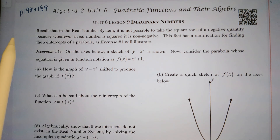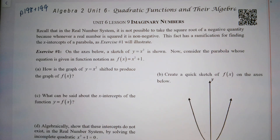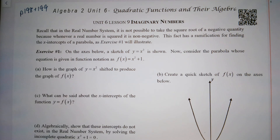Today we're on pages 198 and 199 of our textbook, lesson 9: imaginary numbers. Recall in the real number system it is not possible to take the square root of a negative quantity, because whenever a real number is squared it is non-negative. This fact has ramifications for finding the x-intercepts of a parabola, as exercise number one will illustrate.